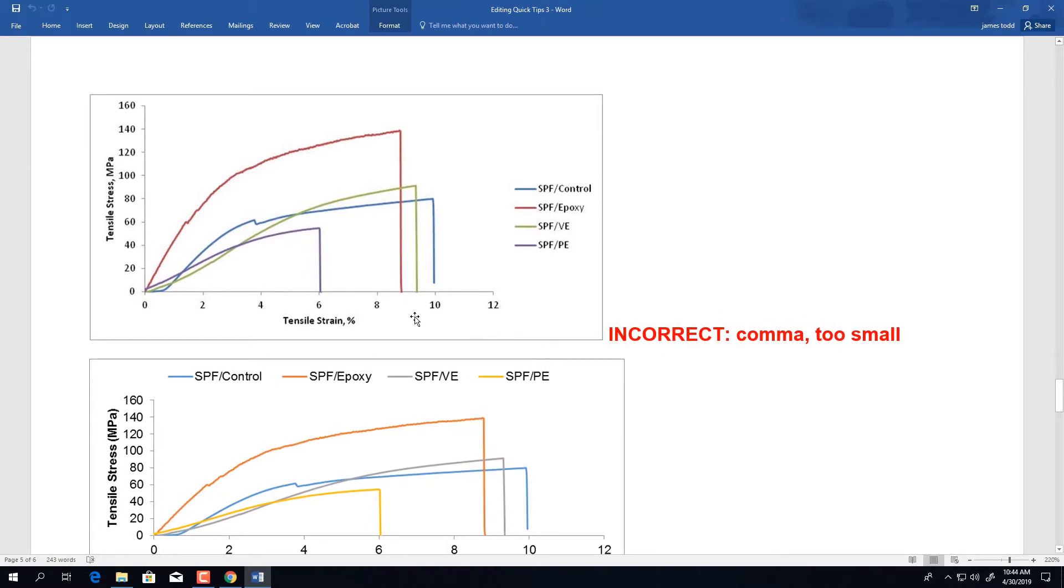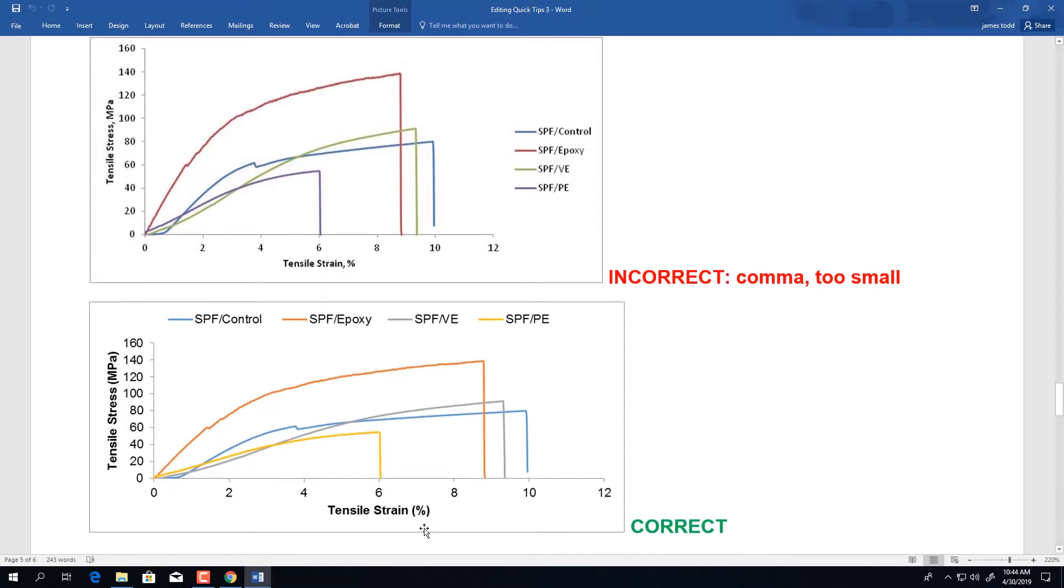Another example here is where a comma was used to separate before the unit of measurement. Again, we use parentheses to put the units of measurement with a space between the axis label. Ensure that the font is the correct size and use sentence case capitalization or title case capitalization, which means capitalizing each important word along the axis. Ensure that your axis label formatting matches. If you use title case, capitalize all words along the axis. If you use sentence case, capitalize the first letter on the axis label.